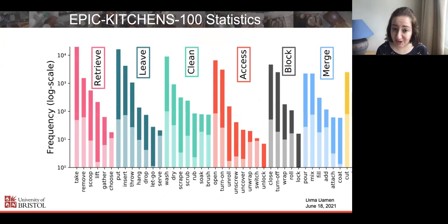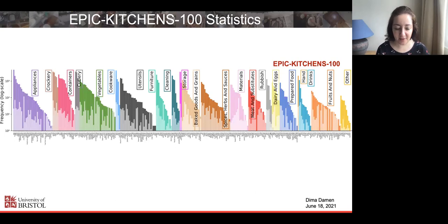The dataset is naturally unbalanced, so the y-axis here is very much log-scaled with many more examples of certain actions than others. The two colors here are from the first version and the extended version. We also provided one level of hierarchy to combine things like washing and drying and brushing and soaking into clean, and similarly for nouns.